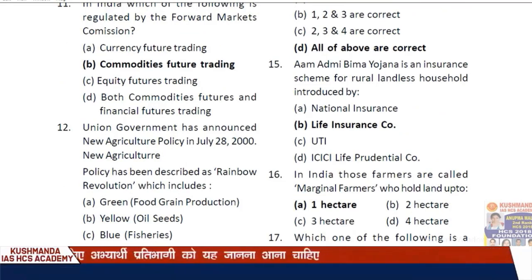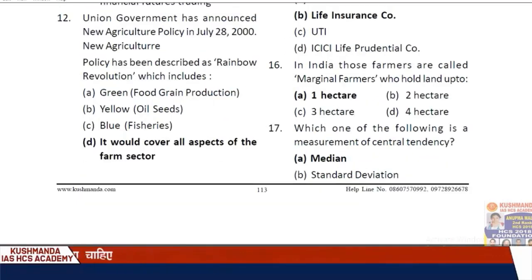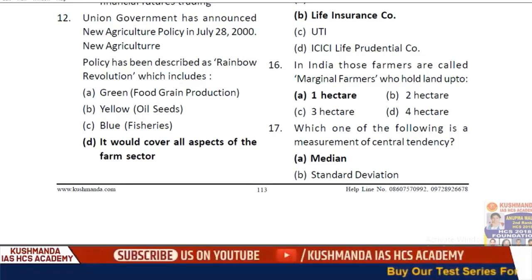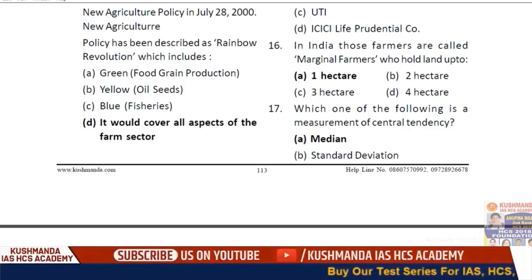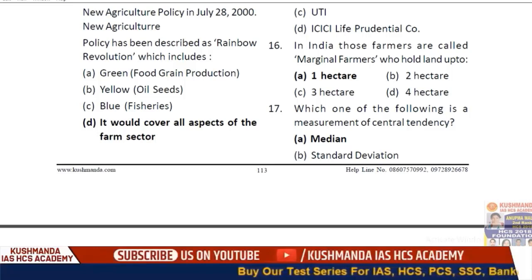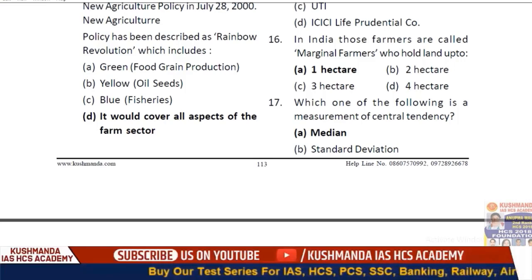Question 15: Aam Aadmi Bima Yojana is an insurance scheme for rural landless households, introduced by LIC — option B. Question 16: In India, farmers who hold land up to one hectare are called marginal farmers.